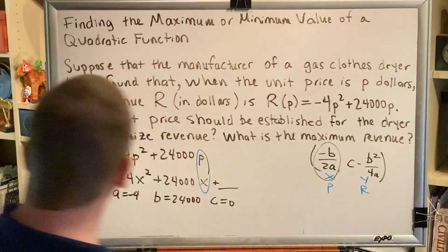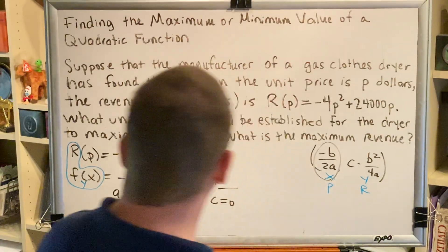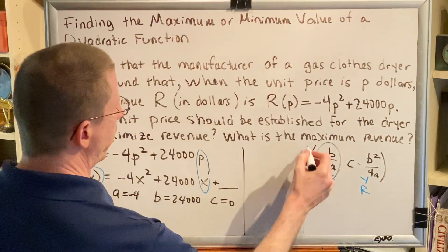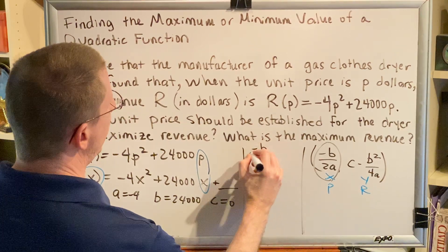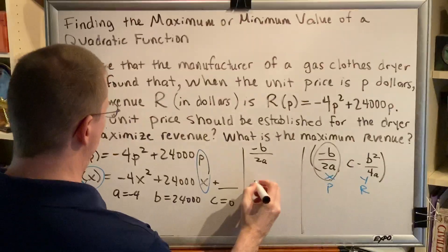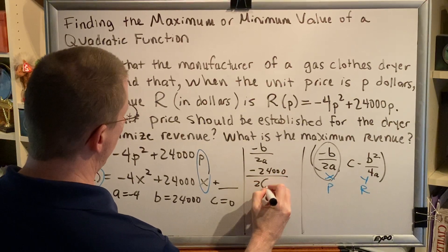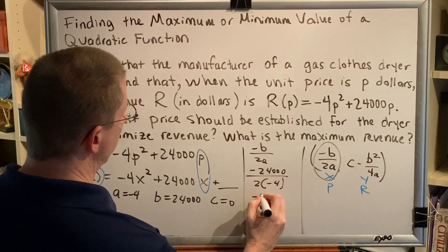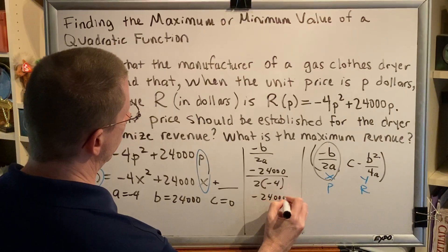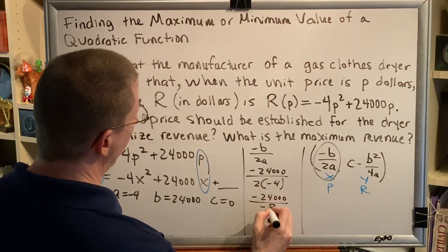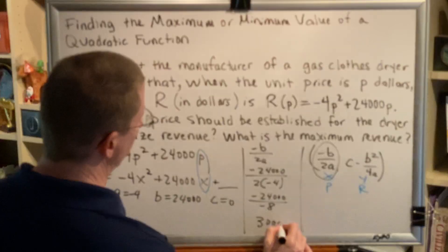Okay, so here we go, plugging into our formula. Let's start with the x coordinate part. So opposite b over 2a. We're going to get negative 24,000 divided by 2 times negative 4. That's negative 24,000 divided by negative 8, which is 3,000.